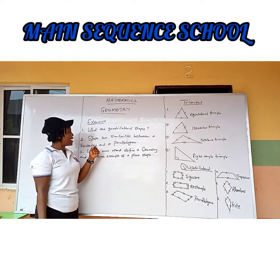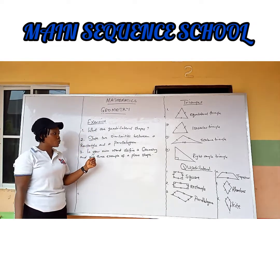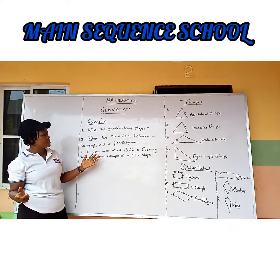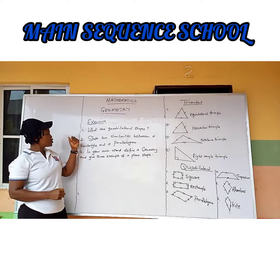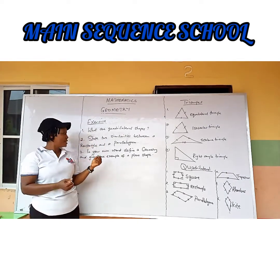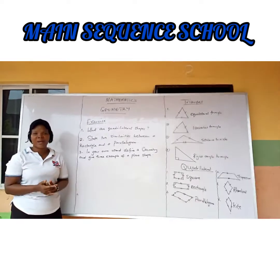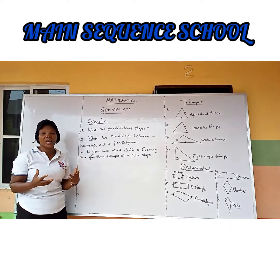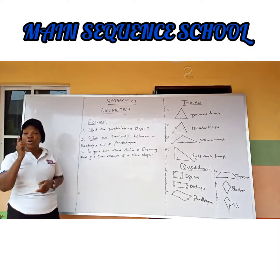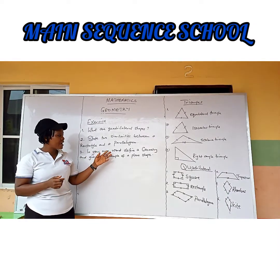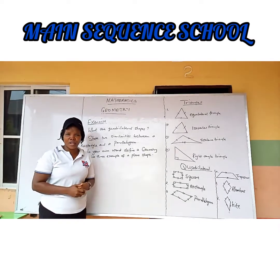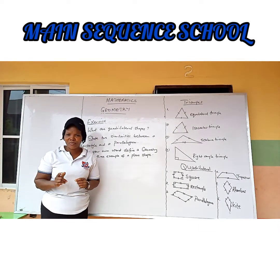I have a class exercise for you to be submitted the next day. First, what are quadrilateral shapes? Two, state two similarities between a rectangle and a parallelogram. Lastly, in your own words, define geometry and give three examples of a plane shape. Thank you very much.